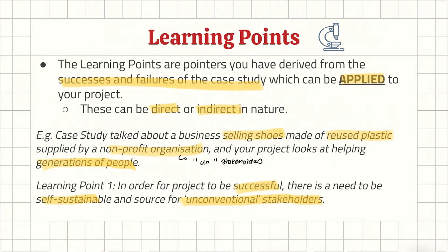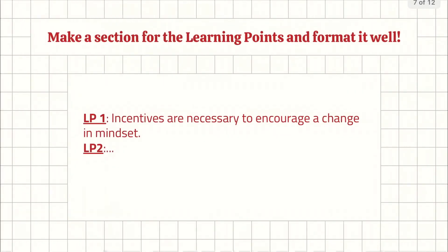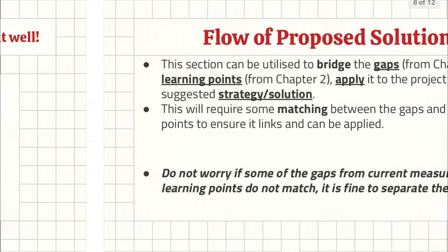In this indirect example, the non-profit organizations are like your unconventional stakeholders, and the concept of self-sustainability is inferred from the generations of people you want to help and the reused plastic supplied by the non-profit for ongoing sustainability. Do make a section for your learning points and format it properly — for example, LP1, LP2, LP3, LP4. Try not to have more than four, because having too many learning points belittles the case study and suggests it's just full of limitations.